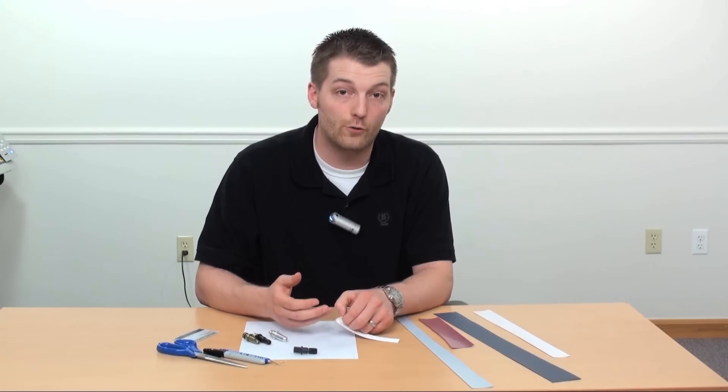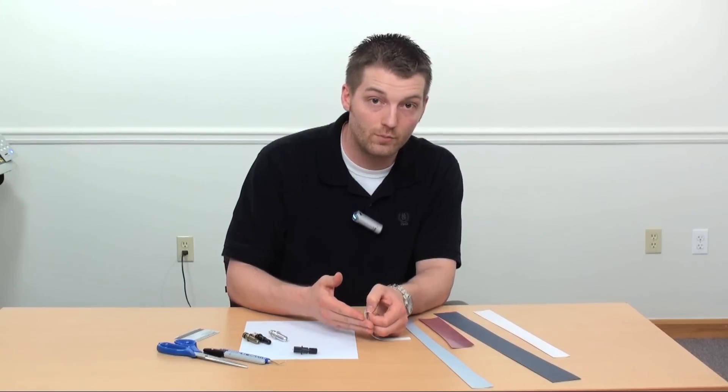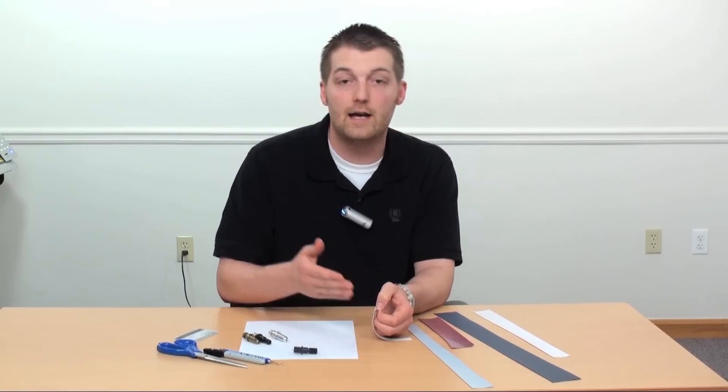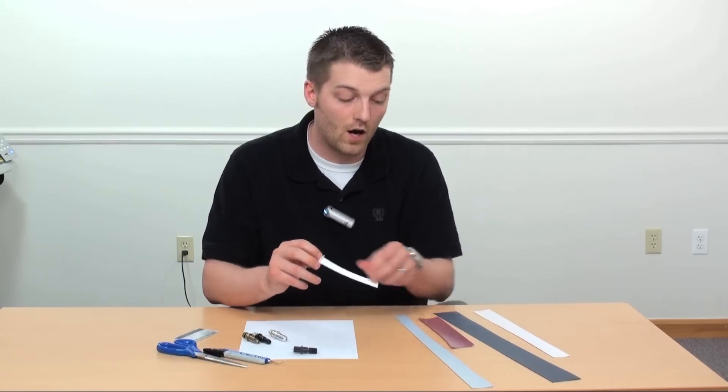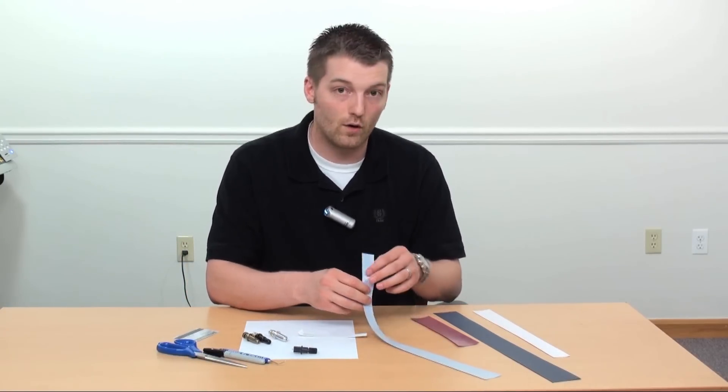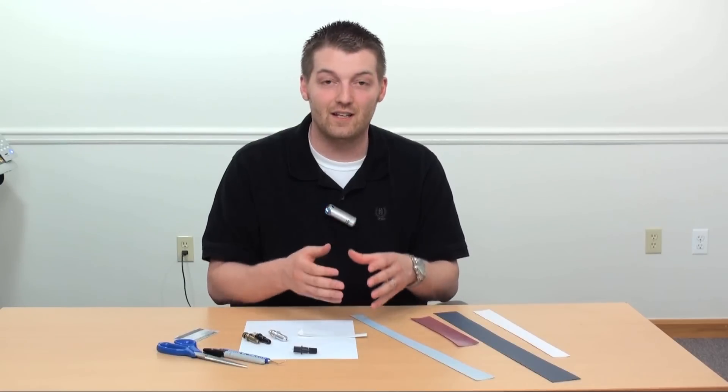Often people will stock two blade holders, one set up for a 45 degree blade for cutting regular films and another set up with a 60 or a higher angle blade for cutting thicker materials like flock and glitter or high detailed work on foils, things like that, so you get a cleaner, better cut.